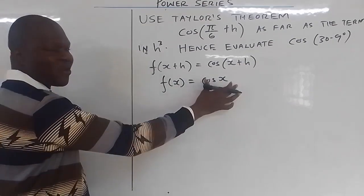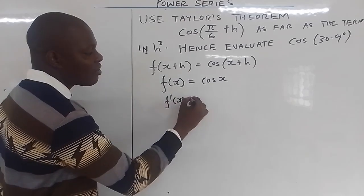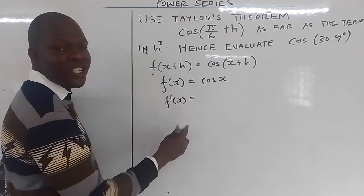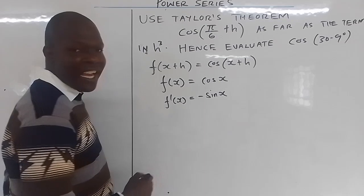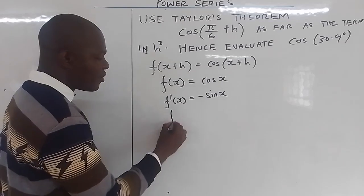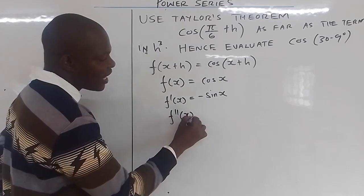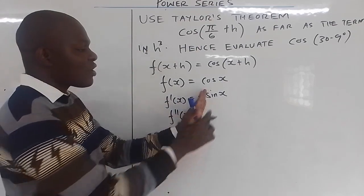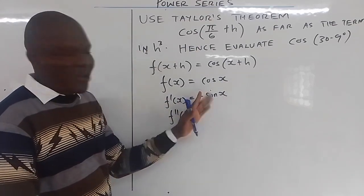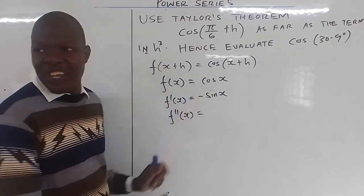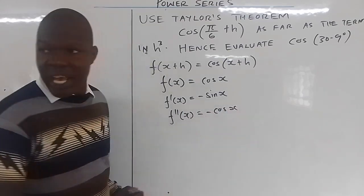If f(x) is cos(x), then the first derivative f'(x): if you differentiate cos(x) you get negative sin(x). Then if you differentiate f(x) for the second time, you take negative outside, differentiate sin(x) to get cos(x), so cos(x) times negative gives negative cos(x).